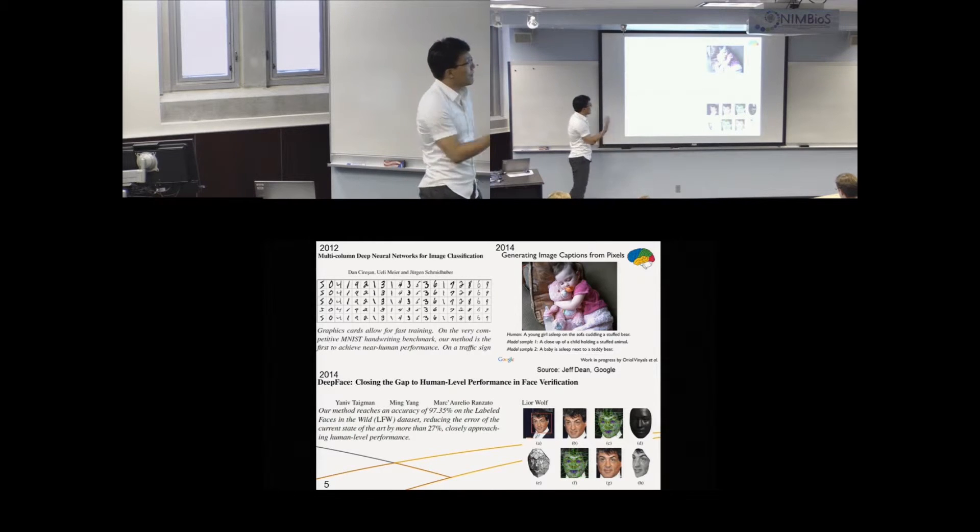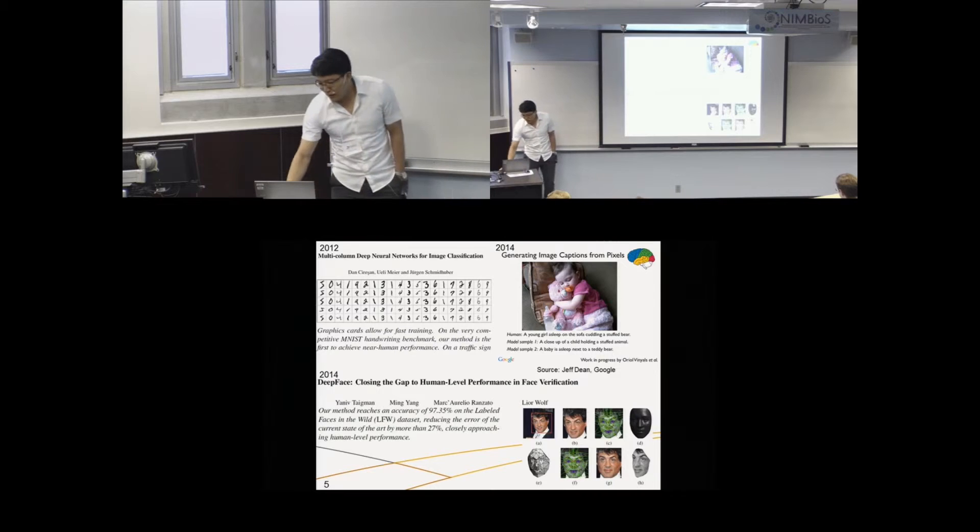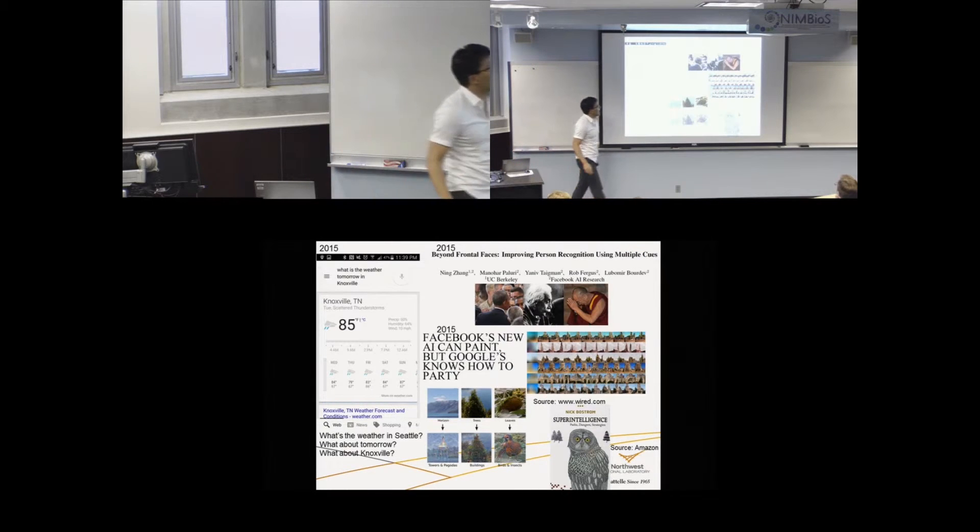And 2014, Facebook's face recognition engine started to recognize human front or face comparable to the level of human. And just one year later, they are now saying recognizing front or face is not fun enough. So they can recognize humans using other cues. Like here, you are seeing only Barack Obama's back. But you can figure out this is Barack Obama and computer can also do that.